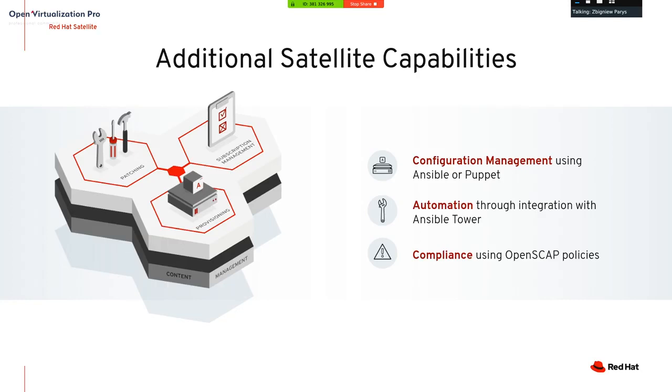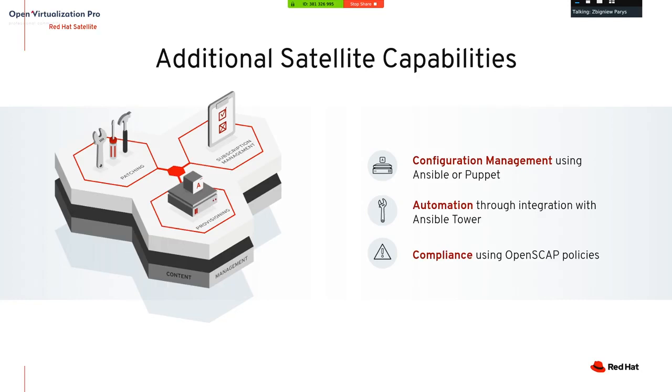Additional capabilities: Red Hat Satellite has built-in Ansible, which in my opinion is the best automation tool in the world. There is also built-in Puppet as an automation tool. Many capabilities still use pure Puppet recipes, but many new features use Ansible playbooks only.